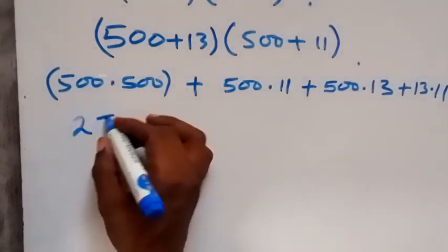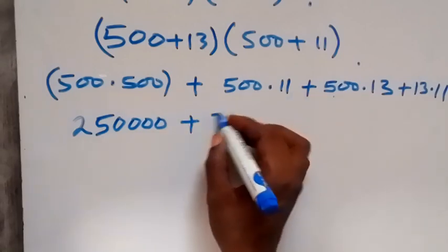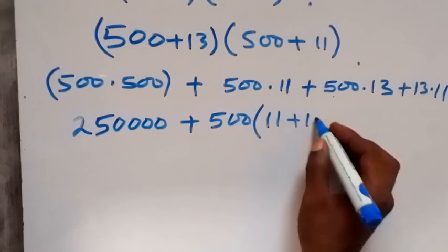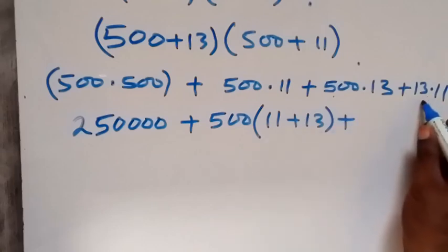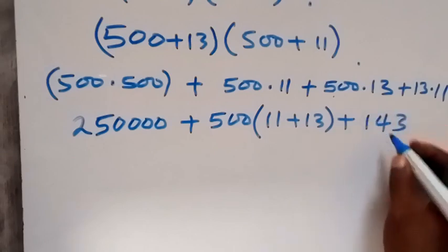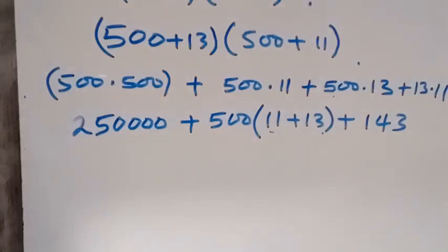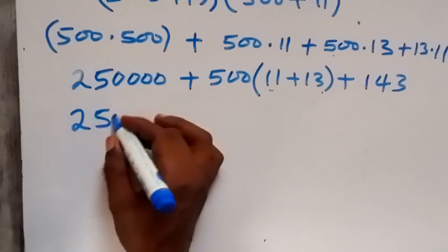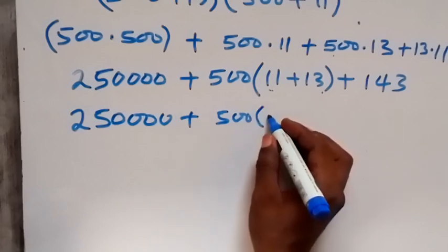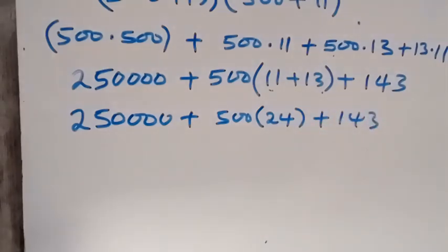So from here we have 250,000, then plus here we have 500 common, which we take out. Then what is left here is 11, then we have plus 13. Then we have 250,000 plus 500 times 24. So we have 250,000, and 500 times 24 will give us 12,000. So we have 250,000 from here, then plus 12,000 from here.